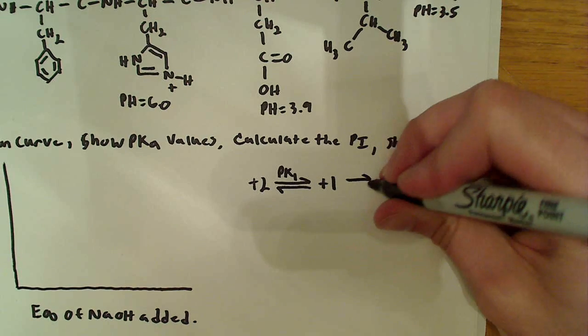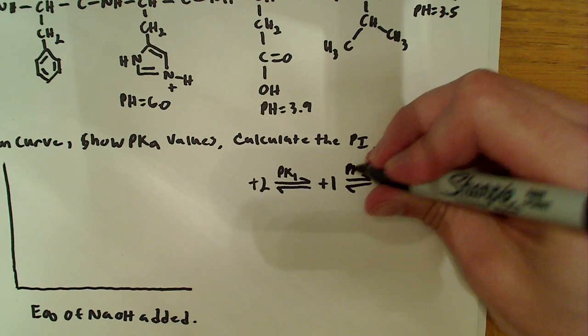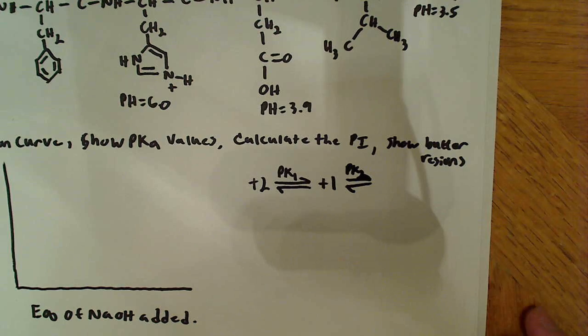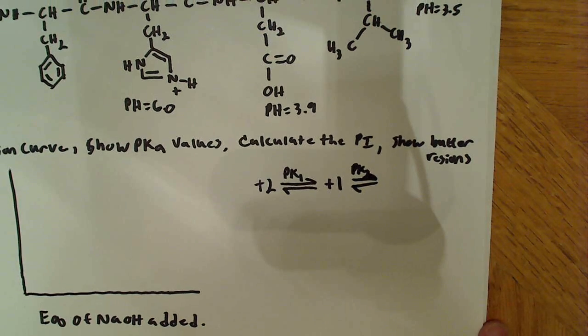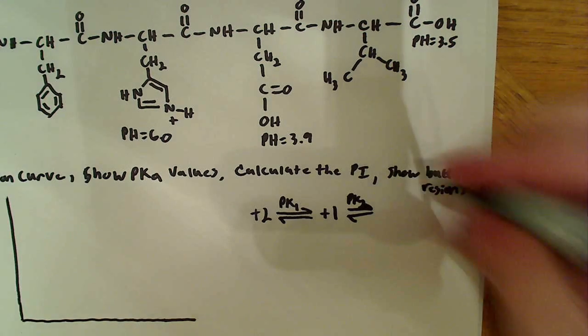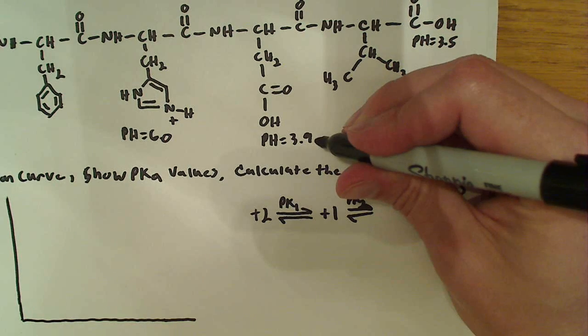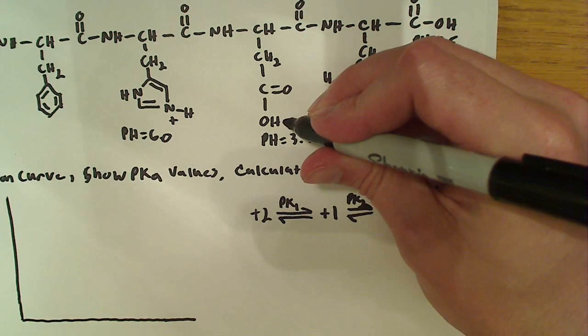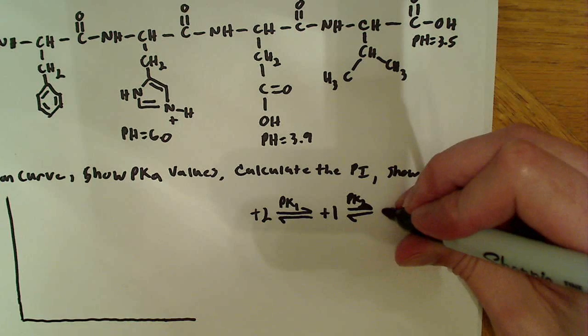Then we're going to go again here, pK2, and we're going to look up here and see which one's got its proton next. And that would be aspartic acid over here, because it has a pH of 3.9, it loses its proton. So that gives us a 0 charge.